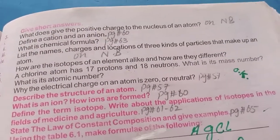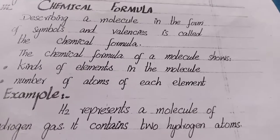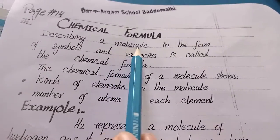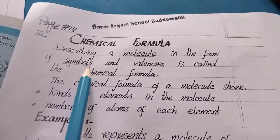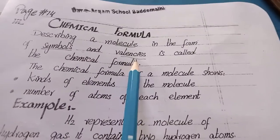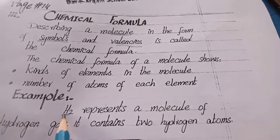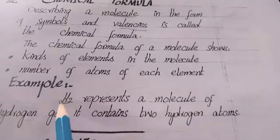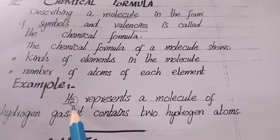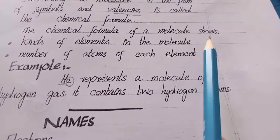Now question number 3: What is a chemical formula? Question number 3 में पूछा है chemical formula क्या है। Answer: a formula describing a molecule in the form of symbols and valences is called the chemical formula. हमारे पास जो molecules होते हैं उन्हें symbols और valences में describe करना होता है — यही chemical formula है। For example, hydrogen को H से represent किया जाता है — यह उसका symbol है।